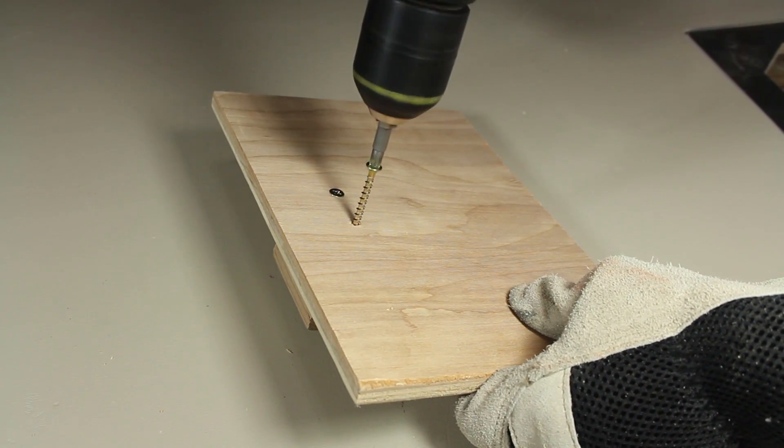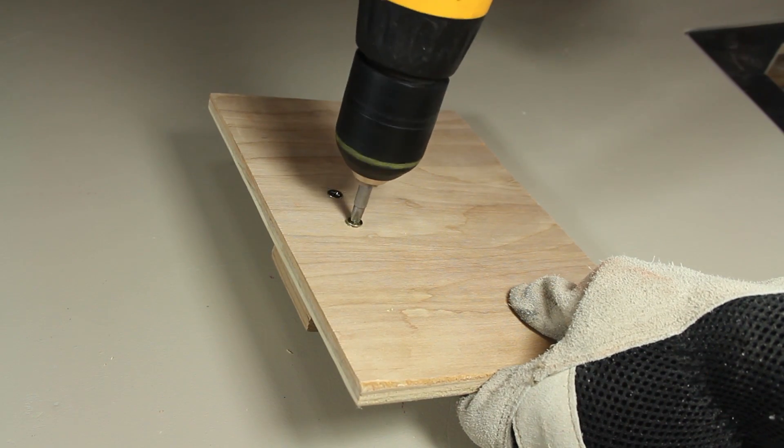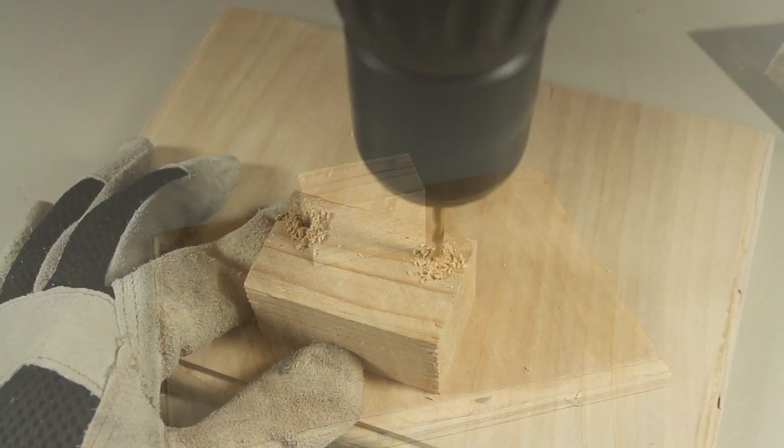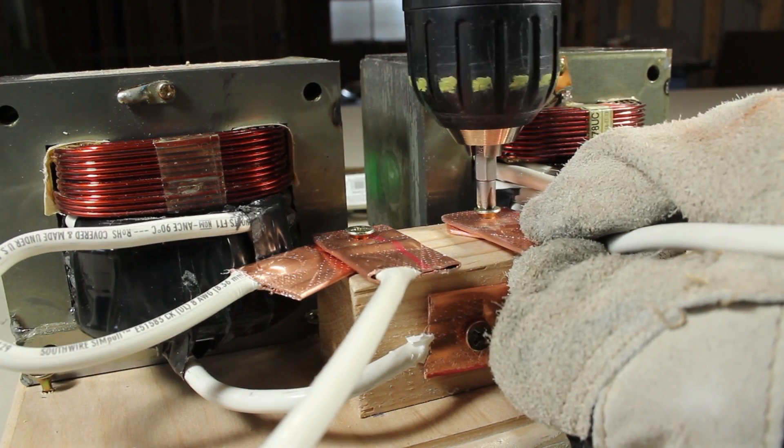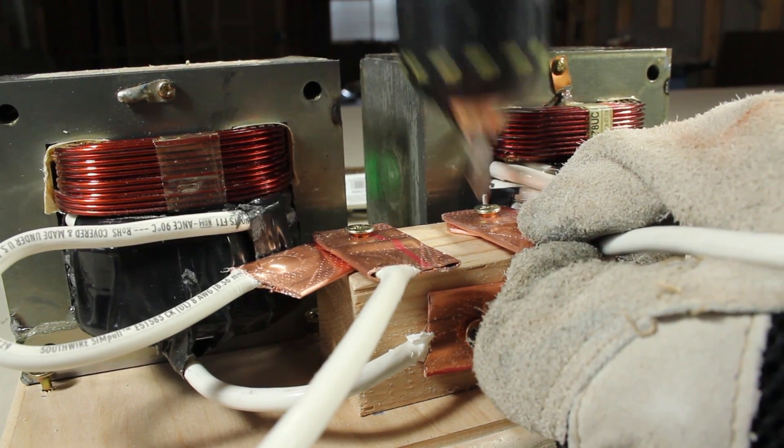Next let's cut a piece of 2x2 and screw it in from the bottom so that it's secured in the center and about 1 inch from the edge. We'll also need to drill a couple of pilot holes in the top because this is where we'll be attaching some copper lugs.